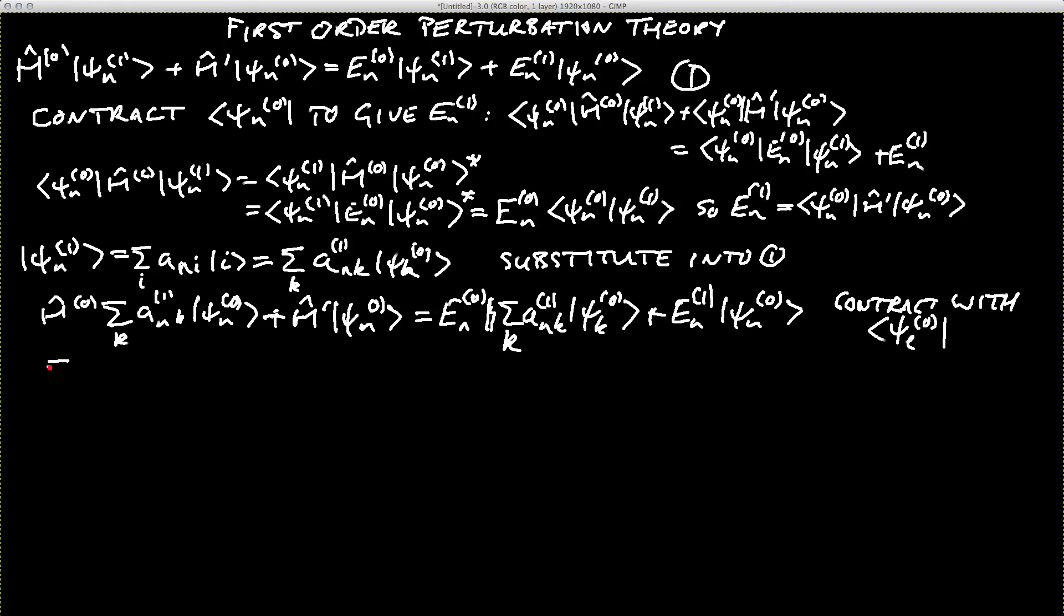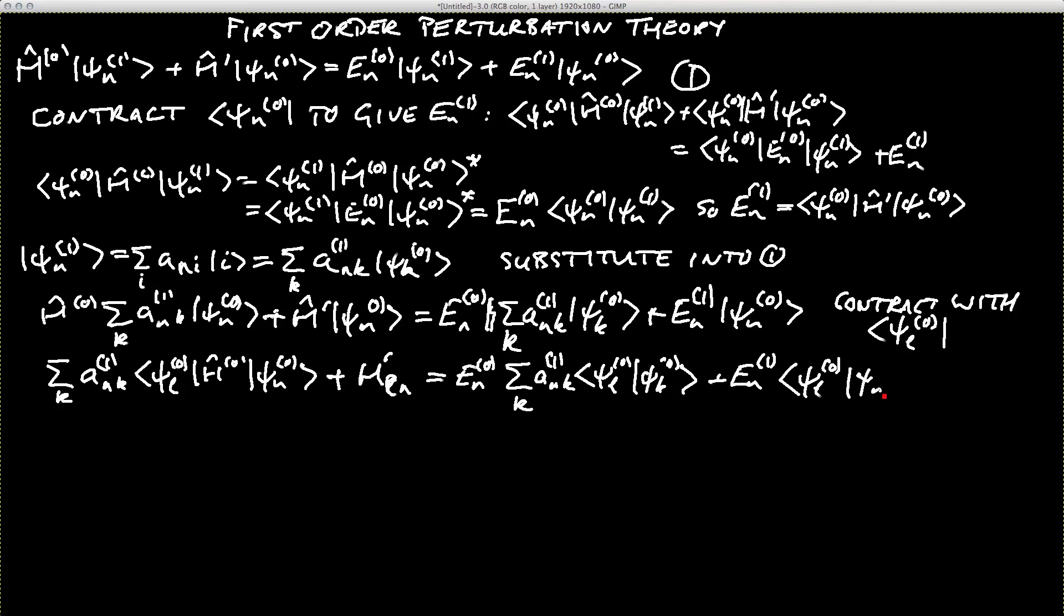Now, when I do that, I'm going to take the h0 at the beginning here inside the sum, and I'm going to also assume that the En of 0 because it's a number can stay out of the bra ket, similarly for the En of 1. So we end up with sum over k of ank(1), bra psi l of 0, h 0, ket psi k of 0, plus h prime ln is equal to En of 0 sum over k of ank(1) bra psi l of 0 ket psi k of 0, and we'll add on at the end here En of 1, bra psi l of 0, ket psi n of 0.